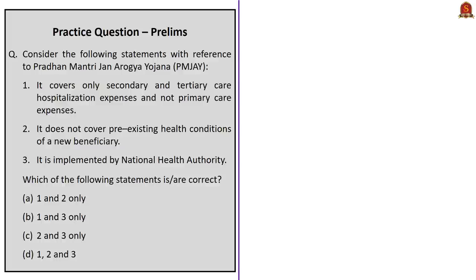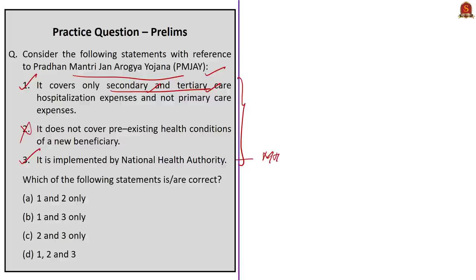Question two: consider the following statements with reference to Pradhan Mantri Jan Arogya Yojana and identify correct statements. Statement one says it covers only secondary and tertiary care hospitalization expenses and not primary care expenses — this is correct, as primary care is already free in government hospitals. Statement two says it does not cover pre-existing health conditions of a new beneficiary — this is incorrect, as PMJAY covers even pre-existing health conditions from day one. Statement three says it is implemented by the National Health Authority — this is correct, as NHA is an attached office under the Ministry of Health and Family Welfare with functional autonomy. Therefore, the correct answer is option B: one and three only.